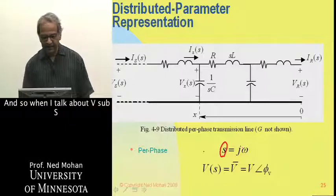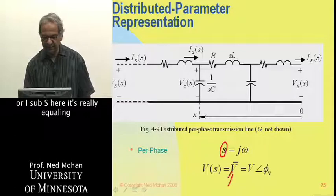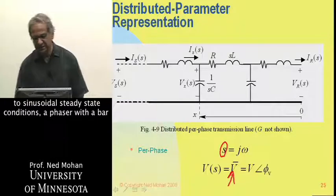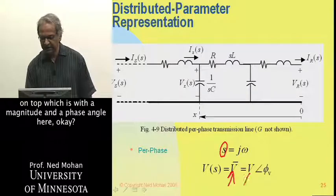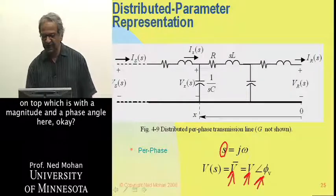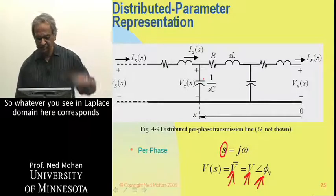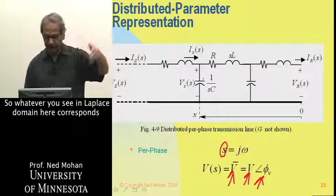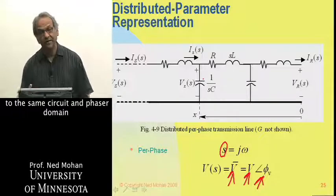And so when I talk about V-sub-S or I-sub-S here, it's really equivalent to, under sinusoidal steady-state conditions, a phasor with a bar on top, which is with a magnitude and a phase angle here. So whatever you see in Laplace domain here corresponds to the same circuit in phasor domain, where you plug S equal to j omega.